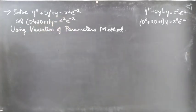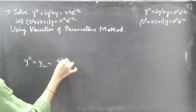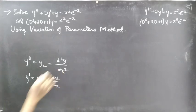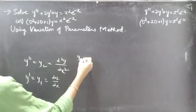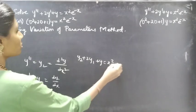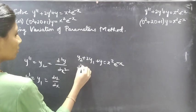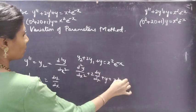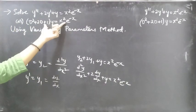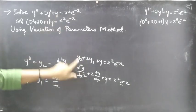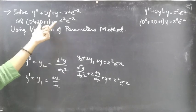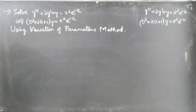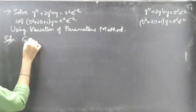Here y'' or y₂ is d²y/dx², and y' or y₁ is dy/dx. We can write the same equation in another form: y'' + 2y' + y = x²e^(-x), or d²y/dx² + 2(dy/dx) + y = x²e^(-x). This is the equation in operator form.